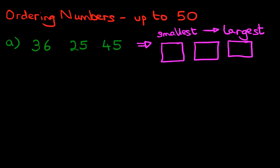Now let's have a look at our three numbers: 36, 25, and 45. The quickest way to do this is first to concentrate on the digit to the left of each of the numbers — that means the three here, the two over here, and the four over here. All of these are tens. So we're not looking at the units; we are simply looking at the tens to begin with. How many tens are there in the first number? There are three. How many tens in the second number? There are two. And how many tens in the last number? There are four.